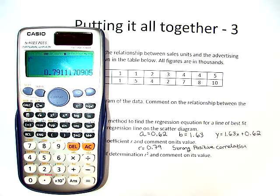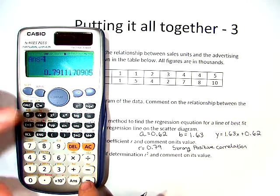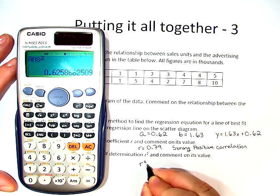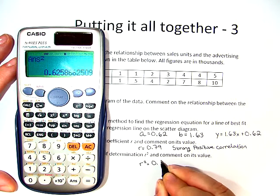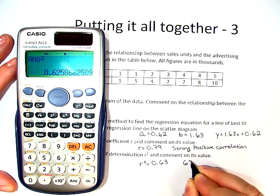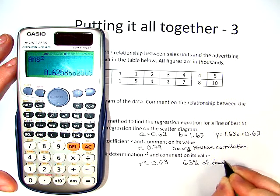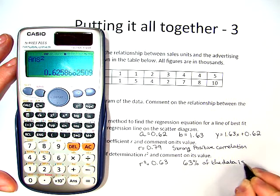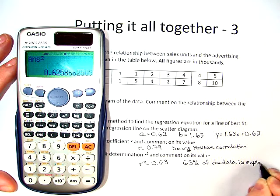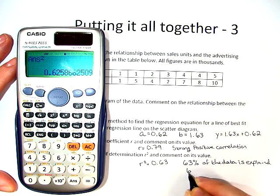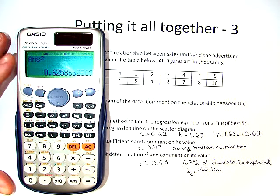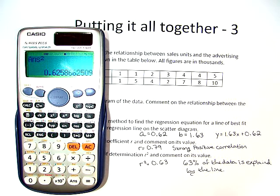Alright, now let's do r squared by hitting the squared button, and we find that r squared is 0.63, or only 63% of the data is explained by the line. So it is still a good fit; however, if 63% is explained by the line...